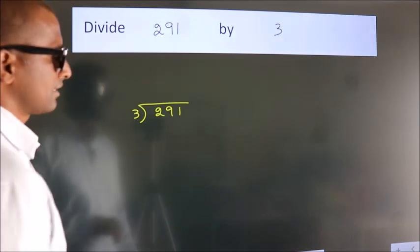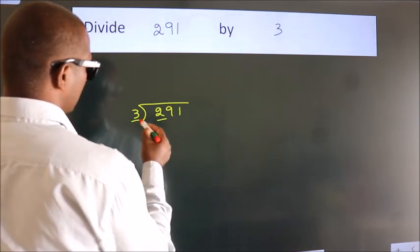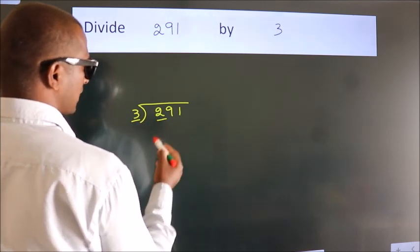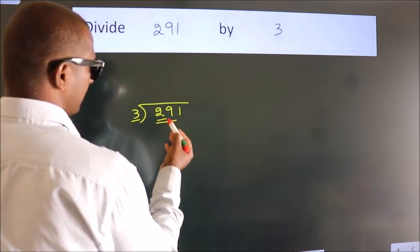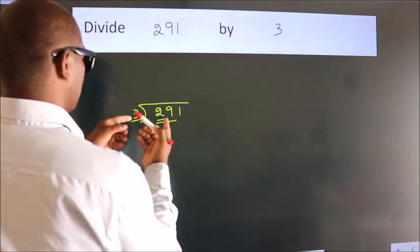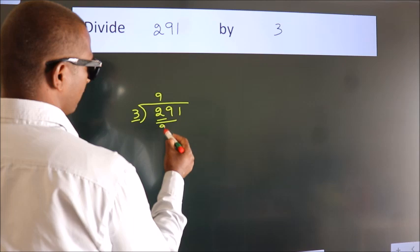Next. Here we have 2, here 3. 2 smaller than 3. So we should take 2 numbers, 29. A number close to 29 in 3 table is 3 nines 27.